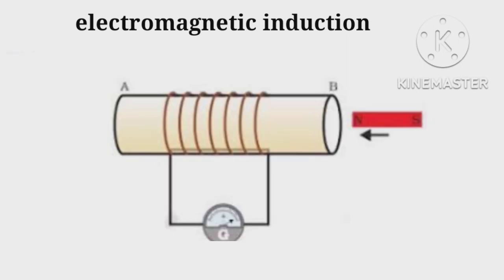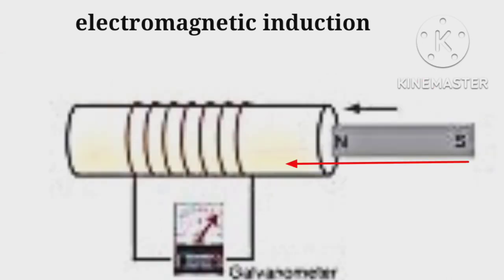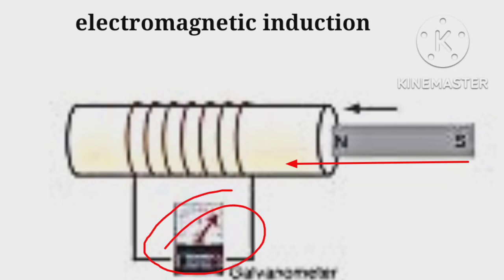Now we will try to understand electromagnetic induction. Let us have a solenoid AB attached with a galvanometer. We place a bar magnet near end B. We see no deflection when the bar magnet is unmoved, but when the magnet is moved towards B, we observe a deflection in the galvanometer. When taken back, the deflection is in the reverse direction.